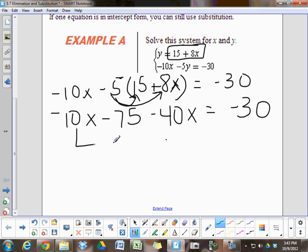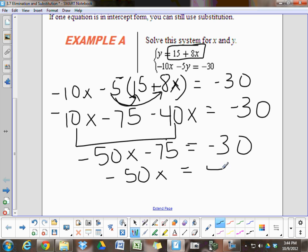And then on the right side, we still have the negative 30. From here, we can combine like terms on the left to get negative 50x minus 75 equal to negative 30. And then we will add 75 to both sides.